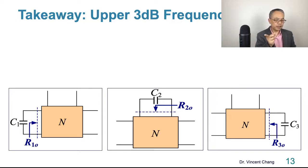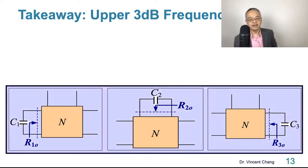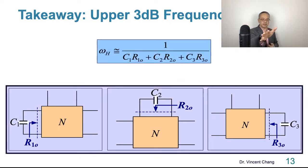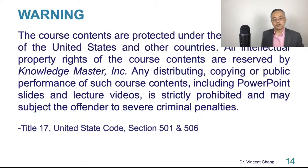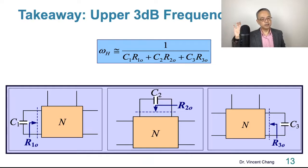And step number three, you just take the sum of the three time constants, right? And then put it in the denominator, get step number four. Take the inverse of the sum, tells you the upper three decibel frequency. So open circuit time constant method, fourth step. The key step lies in the second step.